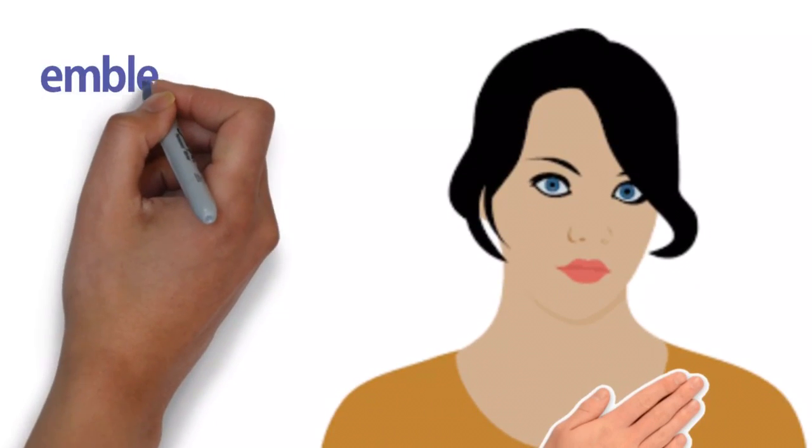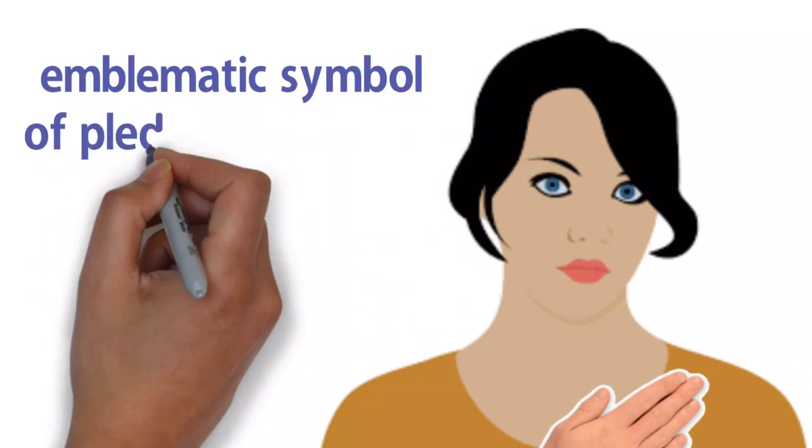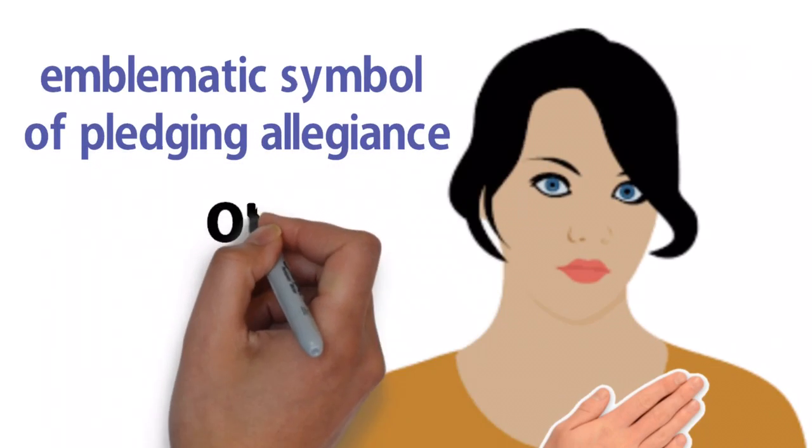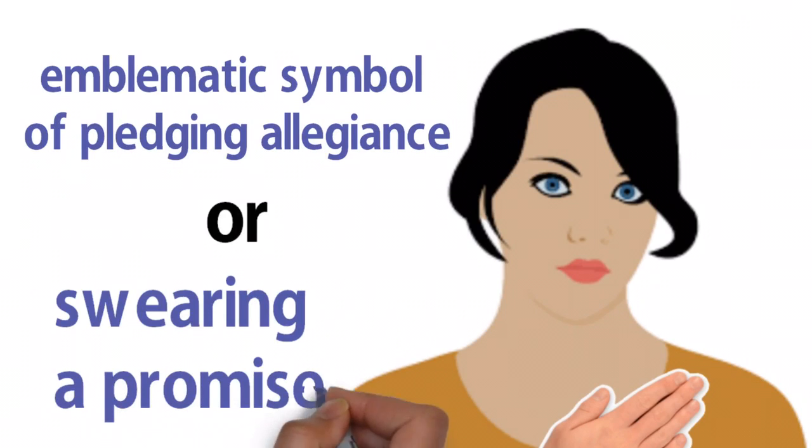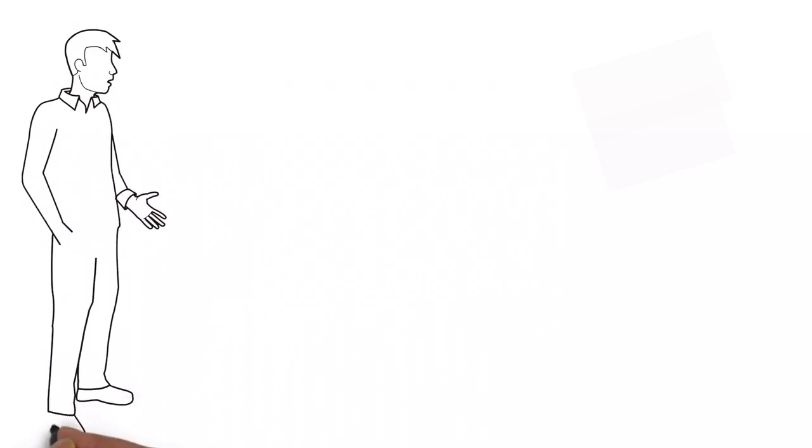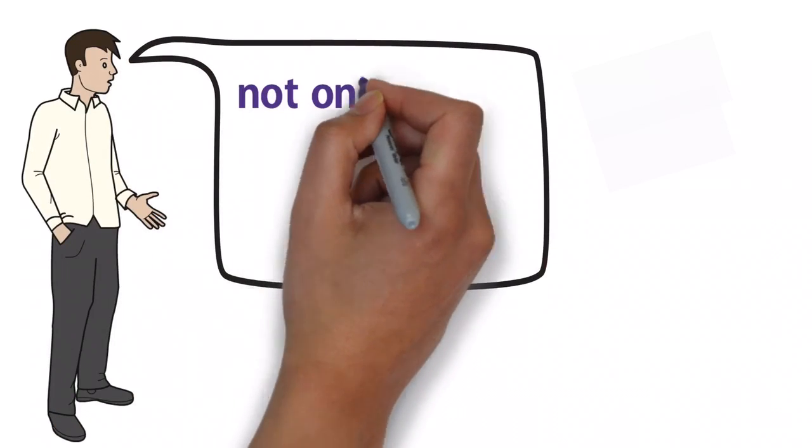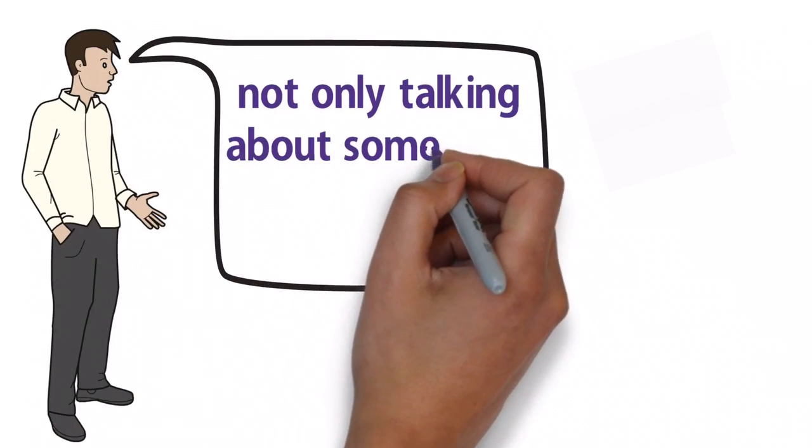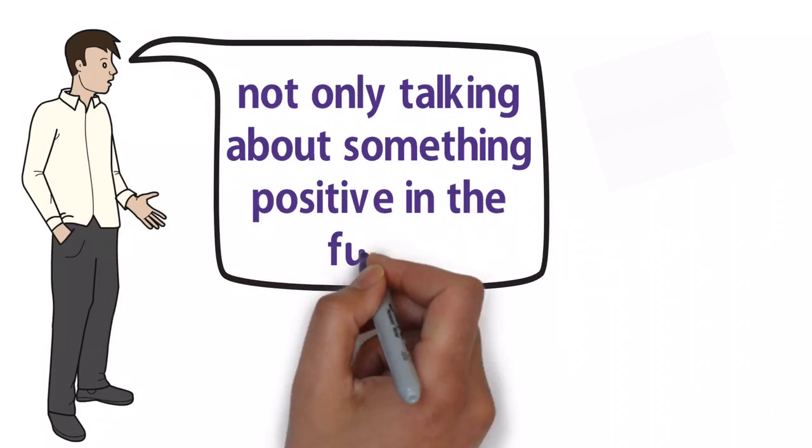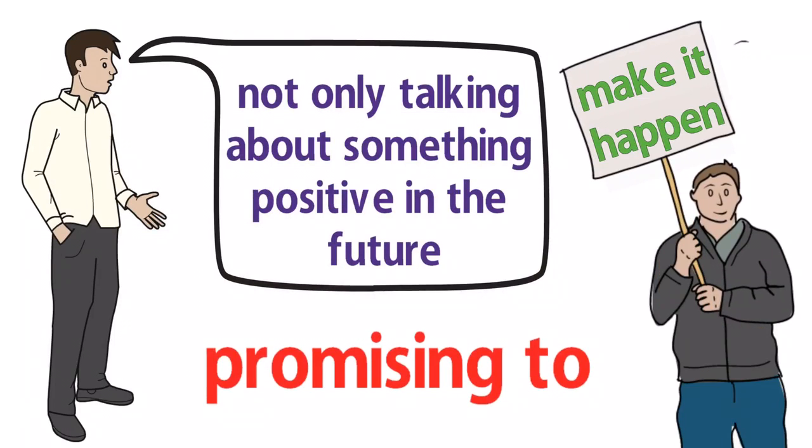You are also using an emblematic symbol of pledging allegiance or swearing a promise by putting your right hand in that position. In this case, your body understands that you are not only talking about something positive in the future, but you are promising to make it happen.